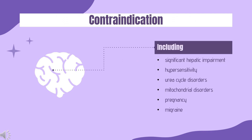Contraindication: Valproic acid is contraindicated in patients with significant hepatic impairment, hypersensitivity to components of the drug or its class, urea cycle disorders, mitochondrial disorders, suspected mitochondrial disorders in patients younger than 2, and during pregnancy — especially for migraine prophylaxis with VPA.